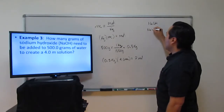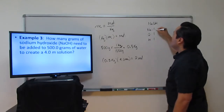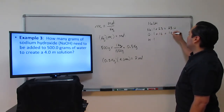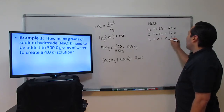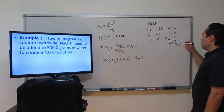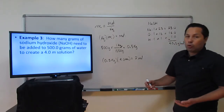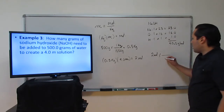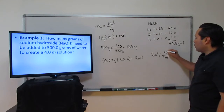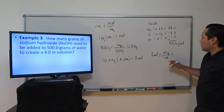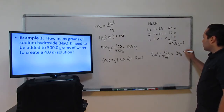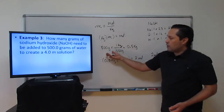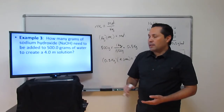For NaOH there's 1 Na, 1 oxygen, and 1 hydrogen. The molar mass of sodium is 23, oxygen is 16, and hydrogen is 1 — adding them together gives us 40 grams per mole. We have 2 moles, so: 2 moles × (40 grams / 1 mole) = 80 grams of NaOH. The moles cancel out and we end up with 80 grams of sodium hydroxide that should be added to the 500 grams of water to achieve the formal solution. That takes care of example 3.